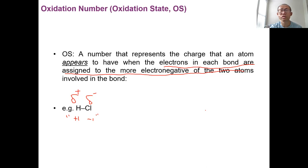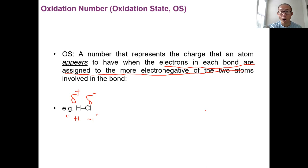That's why we say oxidation number is something we assign to elements so we can study redox reactions better. We have very nice rules for assigning these numbers. We have seven rules that will help us assign oxidation numbers, and after that you can assign the oxidation number for any compound or element given to you.